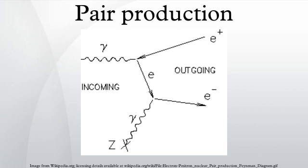Pair production often refers specifically to a photon creating an electron-positron pair near a nucleus, but can more generally refer to any neutral boson creating a particle-antiparticle pair.